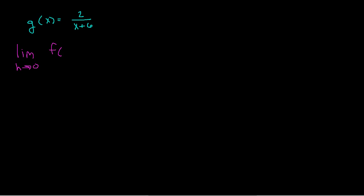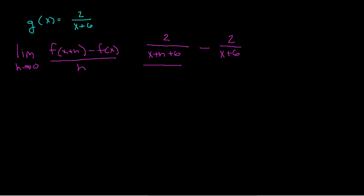The formula is f of x plus h minus f of x, divided by h. Now plugging in x plus h, I get 2 over x plus h plus 6, minus the function f of x which is 2 over x plus 6, all divided by h.